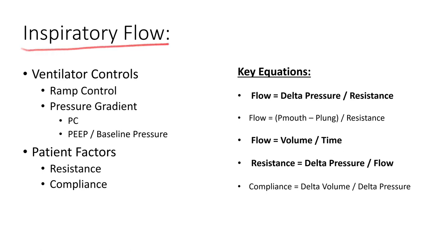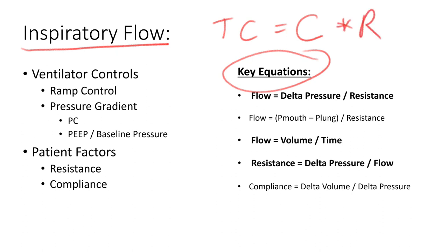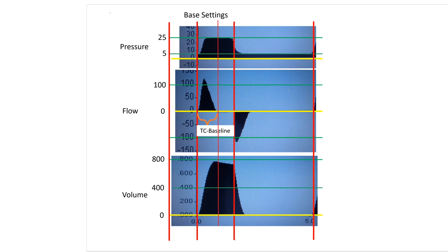In this short video, I'm going to demonstrate some of the factors that affect inspiratory flow and the time constant. Keep in mind the key equation: time constant equals compliance times resistance. We're going to look at how changing ventilator controls — such as the ramp control and the pressure gradient — as well as patient factors like resistance and compliance, affect inspiratory flow and time constant. We'll be looking at our pressure, flow, and volume waveforms for this analysis.